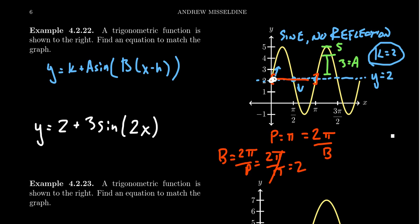And this gives us the simplest, least complicated trigonometric function that gives us this graph: y equals 2 plus 3 sine of 2x.